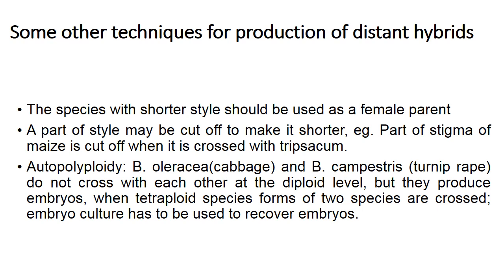Other techniques for production of distant hybrids: the species with a shorter style should be used as the female parent, or part of the style may be cut off to make it shorter. For example, part of the silk of maize is cut off when crossed with Tripsacum. Another technique is autopolyploidy: Brassica oleracea (cabbage) and Brassica campestris (eastern turnip rape) do not cross with each other at the diploid level.